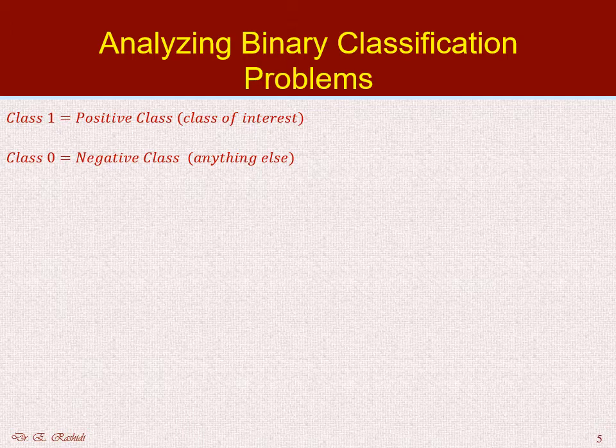To help relate with these definitions, consider a classical binary classification example: predicting whether a person has a disease such as cancer. There are only two possibilities — either the person has the disease or they do not. When the person takes a test to detect that disease, the outcome is either positive or negative. Positive means the person suffers from the disease, which is bad news. Negative means they do not have the disease, which is good news.